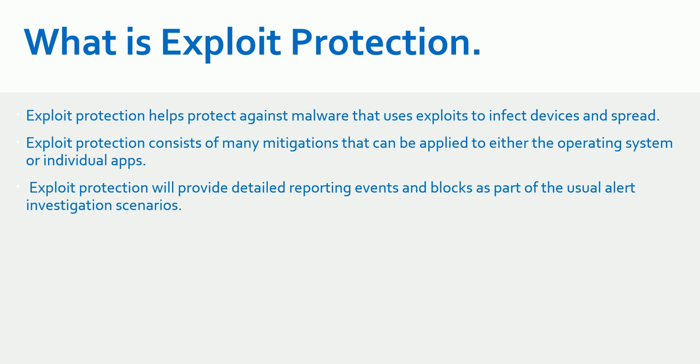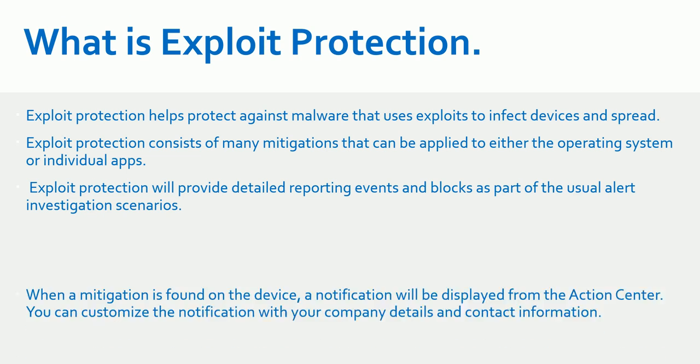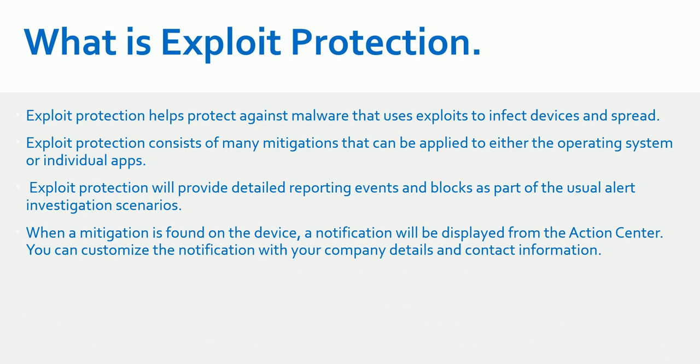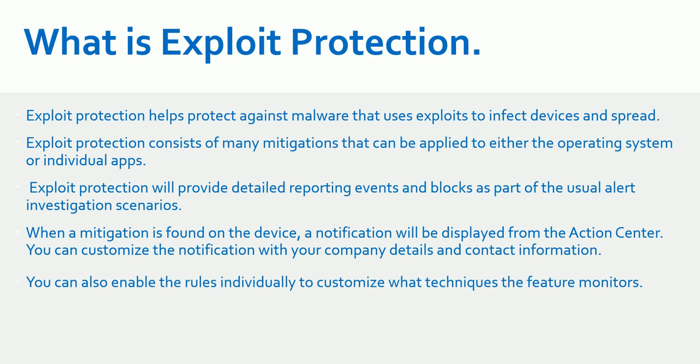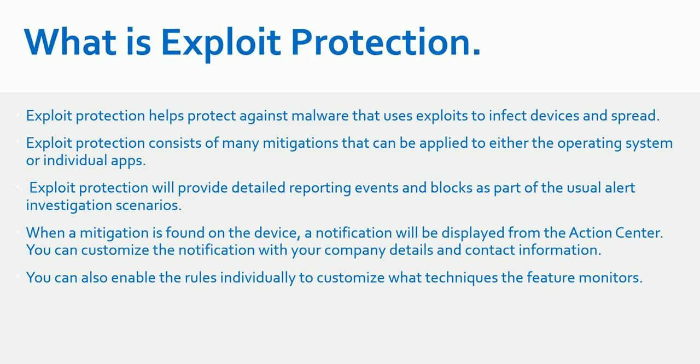Exploit protection provides detailed reporting events and blocks as part of alert investigation scenarios. When a mitigation is found on the device, a notification will be displayed from the Action Center. You can customize the notification with company details and contact information, and you can also enable rules individually to customize what techniques the feature monitors.